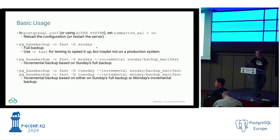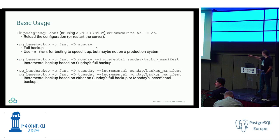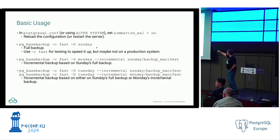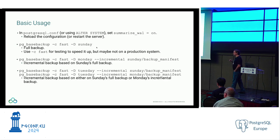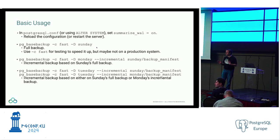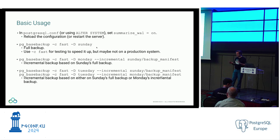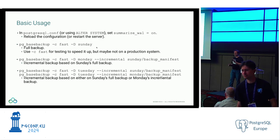When you do an incremental on top of another incremental, you only need the last backup manifest file, not the whole chain of manifest files — just the one as shown in the example. And summarize_wal is only used for this incremental backup feature. When I first proposed this a few years ago, people wanted the WAL summarizer to do lots of other things, but I pushed back on that because there's a lot of advantage in having it be something narrowly tailored for this purpose.